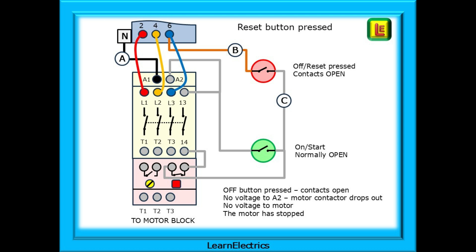The result is that terminal A2 has no voltage and the contactor coil drops out along with the contacts L1-T1, L2-T2, L3-T3, and 13-14. Note that neutral is still connected and the 400 volts three-phase is still present at the terminals L1, L2, and L3. The motor has stopped.